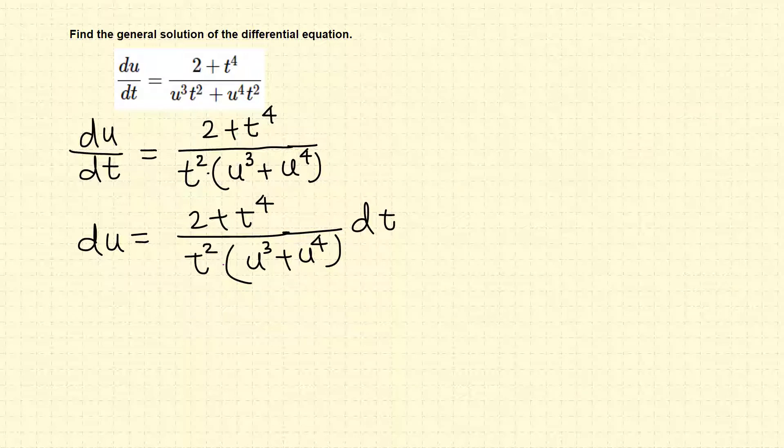Now I want to move this factor to the left side because this is a function of u and we got du here. So this is on the bottom. Basically we are multiplying both sides by this. So this is on the bottom, when we bring to the left it comes to the top.